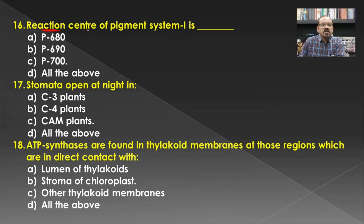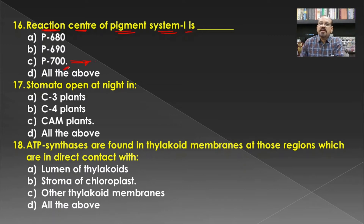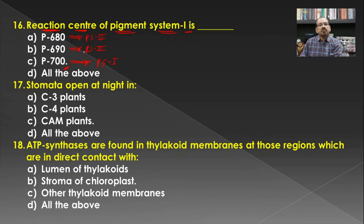The reaction center of pigment system 1 is P700, that is the chlorophyll A pigment of 700 nm. It is responsible to absorb light at or below 700 nm wavelength. P700 is the reaction center for PS1, and P680 is the reaction center of PS2. In some plants, P690 is also found as the reaction center for pigment system 2. Hence the answer is C, that is P700, which is the reaction center for pigment system 1.